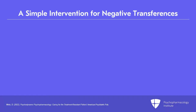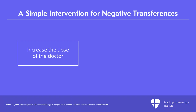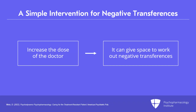We may also want to think about increasing the dose at times, not of the drug, but of the doctor, because that is a simple intervention. We can say to the patient, I'd like to see you a little bit more often while we're doing these changes, and when you have a sense that there are negative transferences at play, sometimes that simple intervention can give you space to work that out and change something about the way the patient feels that you're investing in them.